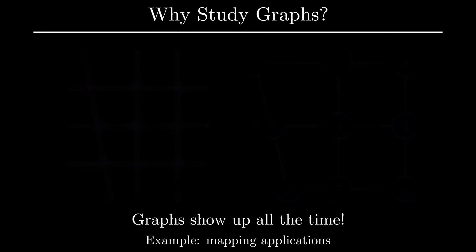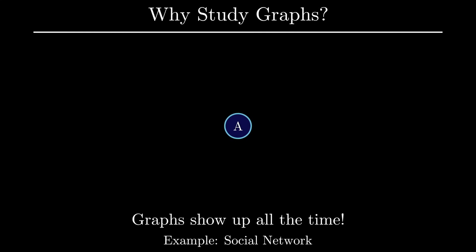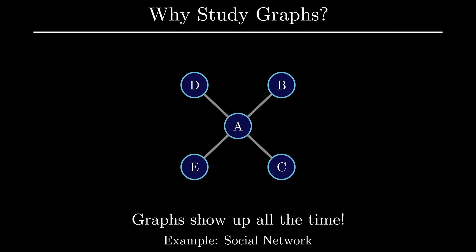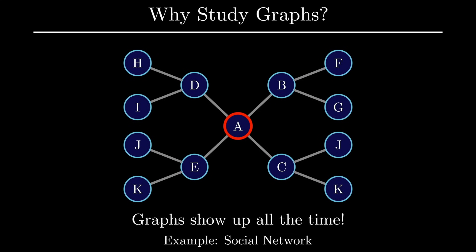Another natural application of graphs is in social networks. In the context of this application, imagine edges of a graph now represent friendships between people in a network, where each node represents an individual. Suppose you are interested in recommending new friends to person A who currently has four friends. A natural way to solve this problem is to look at all of person A's friends, find friends of these friends, and recommend them. These types of problems are easily modeled and solved with graph theory.